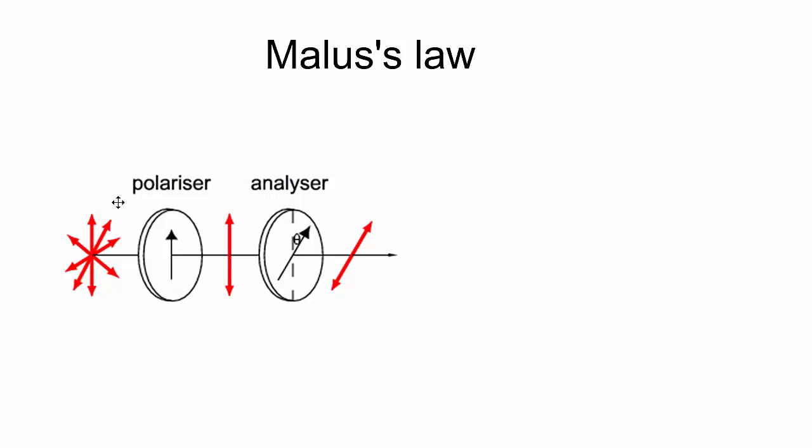Here we have a light source giving unpolarized light, that is light oscillating in any direction, and it passes through a polarizing filter and becomes polarized light, which is only oscillating in this particular direction. It then hits another sheet of polarizing filter, which is turned through some angle theta degrees here.